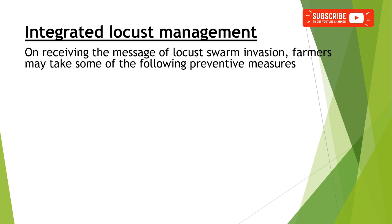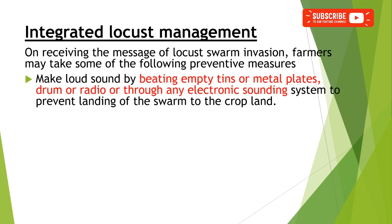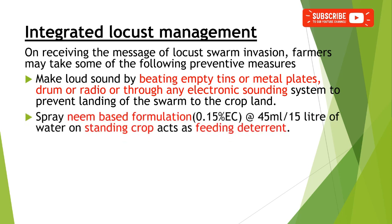Now we can look at integrated locust management. On receiving the message of a locust swarm invasion, the farmer should take preventive measures by making loud sounds — by beating empty tin boxes, metal plates, or drums, or by using a radio or electronic sounding devices — which avoids the landing of the swarm on cropland. Another preventive measure is spraying a neem-based formulation at 0.15 percent EC at the rate of 45 ml per 15 liters of water on standing crops, which acts as a feeding deterrent and avoids feeding by locusts.